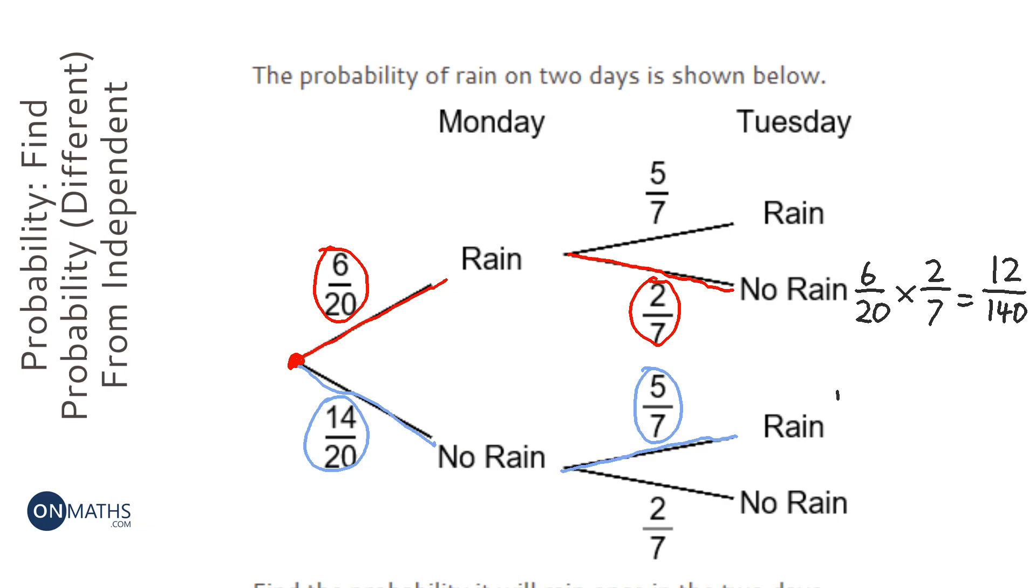I can then work out the other probability, so it's 14/20 times 5/7. We've already done the work now for the bottom which is 140, and then we need to do 5 times 14. So 5 times 10 is 50, 4 times 5 is 20, so that would be 70/140.